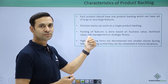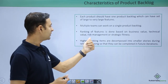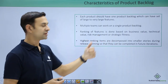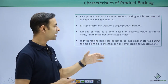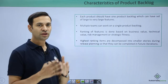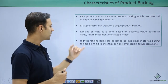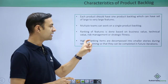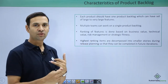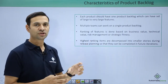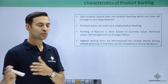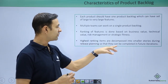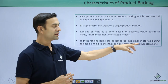Technical value, technical feasibility, risk management, and strategic fitness of a particular feature are also considered. The highest ranking items are decomposed into smaller stories during release planning — we figure them out, decompose them into smaller stories, then assign them to different iterations. We then decide which items can be completed in future iterations or not. This is the importance of product backlog and why it is so widely used.